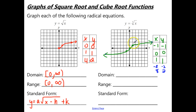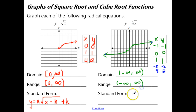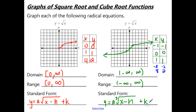We can use those three central points as our critical points. The domain goes forever in the negative direction and forever in the positive direction. The range goes forever downward and forever upward. The standard form is: a times the cube root of (x − h), plus k, where h is the horizontal shift and k is the vertical shift.